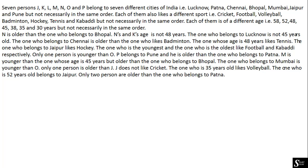The question is: 7 persons — J, K, L, M, N, O and P — belong to 7 different cities of India: Lucknow, Patna, Chennai, Bhopal, Mumbai, Jaipur and Pune, but not necessarily in the same order. Each of them also likes a different sport: Cricket, Football, Volleyball, Badminton, Hockey, Tennis and Kabaddi. Each of them is of a different age: 58, 52, 48, 45, 38, 35 and 30 years. We need to find out which person belongs to which city, likes which sport, and is of which age.